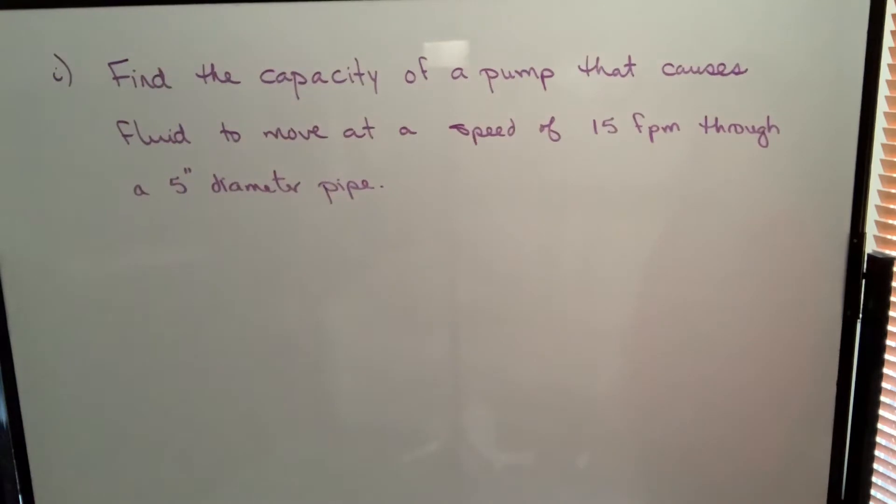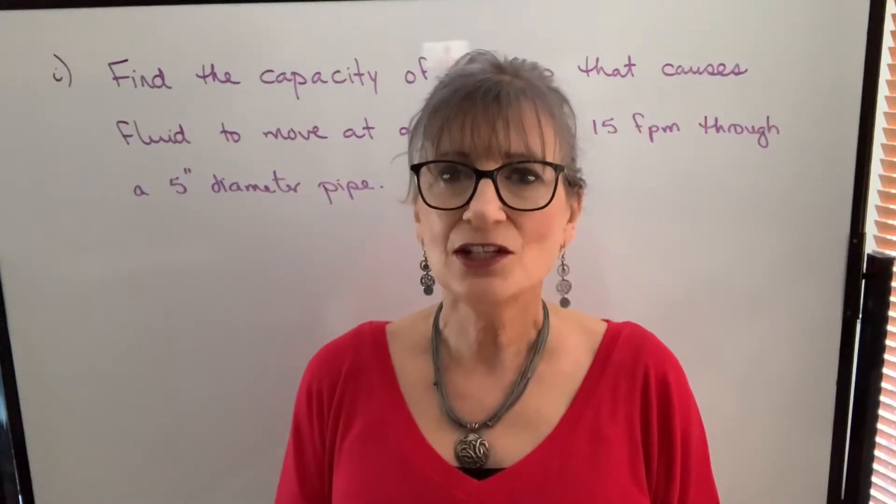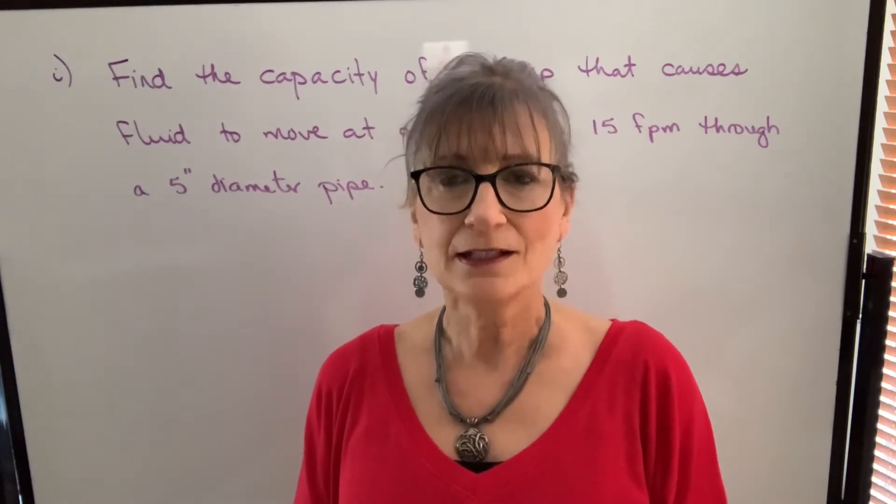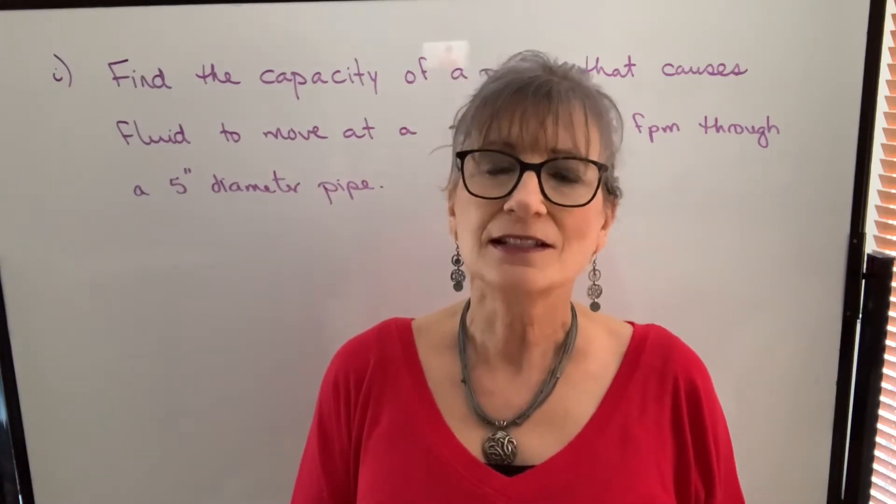The first one asks us to find the capacity of a pump that causes fluid to move at a speed of 15 feet per minute through a 5 inch diameter pipe. So the key here is finding the volume in cubic inches, and it will be per minute, and then changing that to gallons.